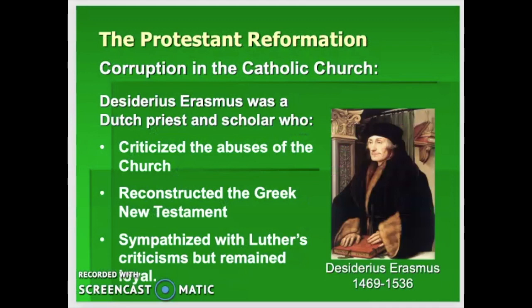There was corruption in the Catholic Church. Desiderius Erasmus was a Dutch priest and scholar who criticized the abuses of the Church while never leaving it. He always believed that the Catholic Church was the true Church — it had just gotten off track. He also pieced together something very close to the original Greek New Testament by assembling old manuscripts from places like Jerusalem and Cairo, providing a fresh starting ground for Bible translation into other languages.